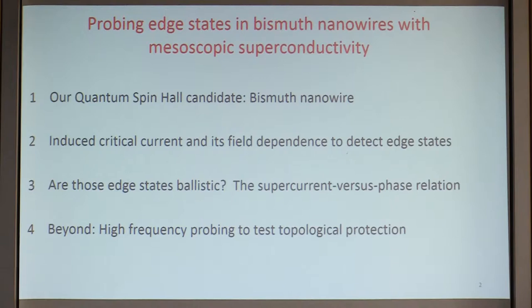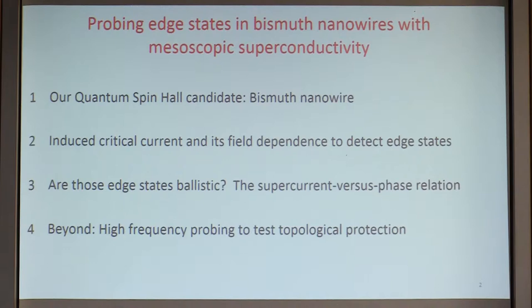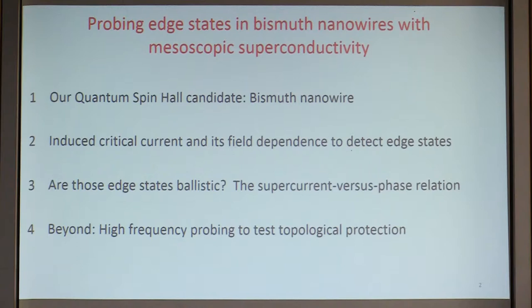These nanowires are a quantum spin Hall candidate. They have surfaces that are quantum spin Hall states, and therefore they have 1D edge wires — these are the bismuth nanowires. I'll show you induced superconductivity through these nanowires. I'll argue that the way the induced supercurrent and its maximum value, the critical current, depends on magnetic field can give you a tool to detect where the supercurrent is flowing and show that it's flowing through edge states. Then I'll give you another tool to see what kind of edge states we have — whether they're disordered or ballistic — by measuring the supercurrent versus phase relation, which tells you what kind of 1D states these are.